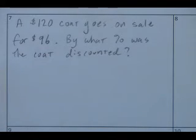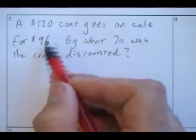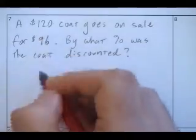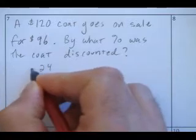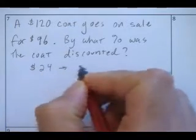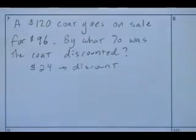A $120 coat goes on sale for $96. By what percent was the coat discounted? We want to know what percent it was discounted. Can I find out how much it was discounted? It went from $120 to $96, so didn't it go down $24? It was discounted $24. That was the discount.